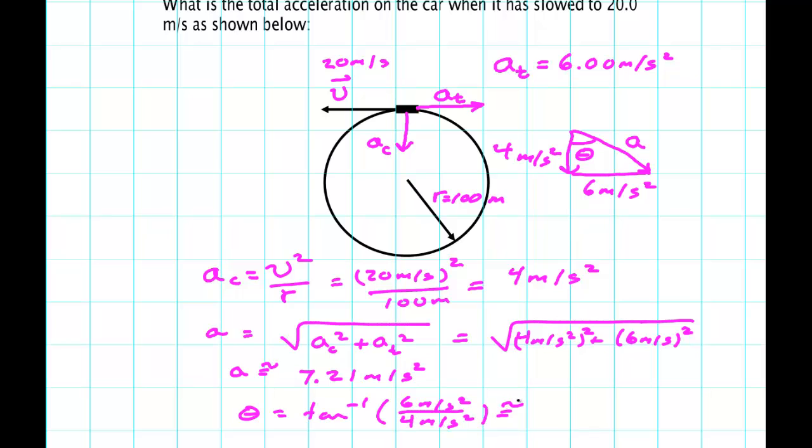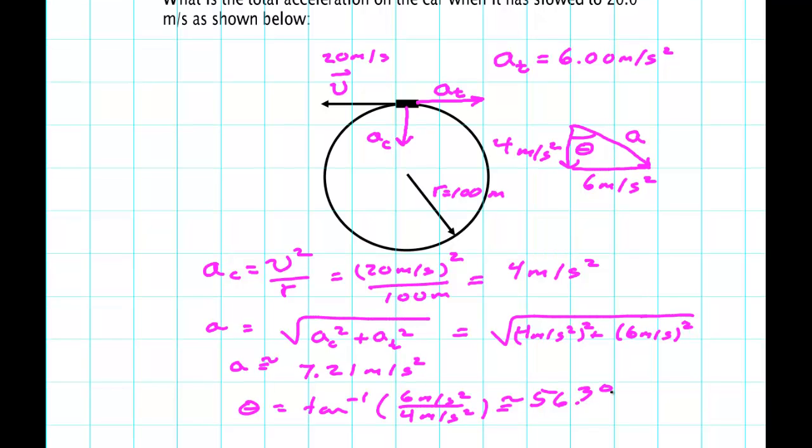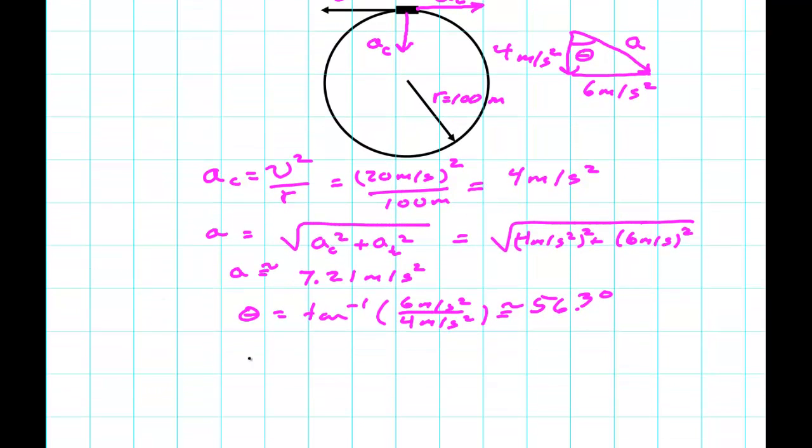Over 4 meters per second squared, and punch my calculator - 56.3 degrees. So the answer is 7.21 meters per second squared.